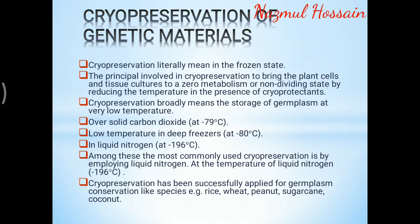Cryopreservation of genetic materials: cryopreservation literally means storage in the frozen state. The principle involved is to bring plant cells and tissue cultures to a zero-metabolism or non-dividing state by reducing the temperature in the presence of cryoprotectants. Cryopreservation broadly means the storage of germplasm at very low temperatures, such as over solid carbon dioxide, low-temperature refrigerators, or in liquid nitrogen. The most commonly used method employs liquid nitrogen at a temperature of minus 196 degrees Celsius. Cryopreservation has been successfully applied for germplasm conservation of species such as rice, wheat, peanut, sugarcane, and coconut.